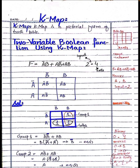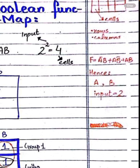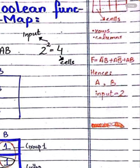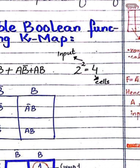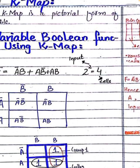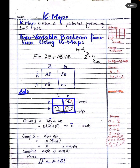Here we can see the inputs. So how many cells do we need? There are only two inputs given in this function: a and b. We can solve it as 2 raised to the power of 2, which gives us 4. It means that we have to make 4 cells according to this function.